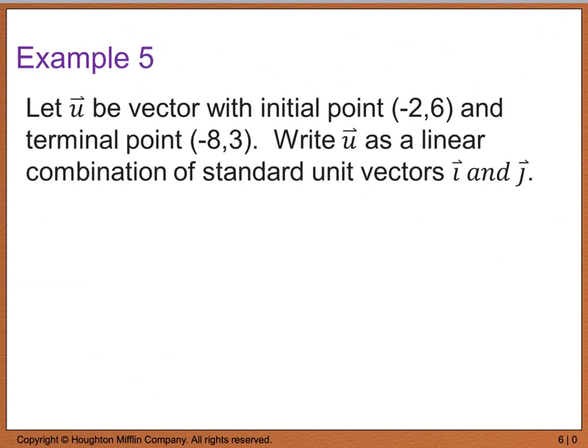So example 5 says to let vector u be a vector with an initial point (-2, 6) and a terminal point at (-8, 3). We want to write vector u as a linear combination of standard unit vectors i and j. So the first thing we have to do is we actually have to find vector u and vector u is going to be found by taking our terminal point and subtracting it from our initial point. So I really have -8 minus a -2 which gives me -6 and I have 3 minus 6 which is a -3.